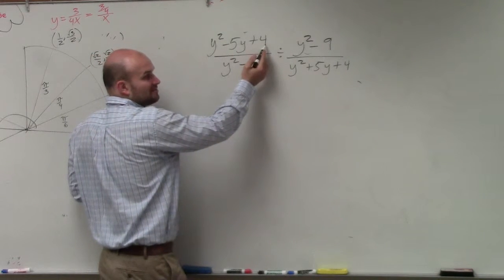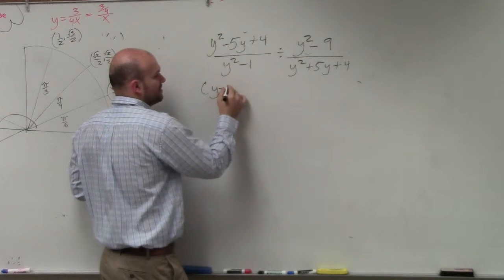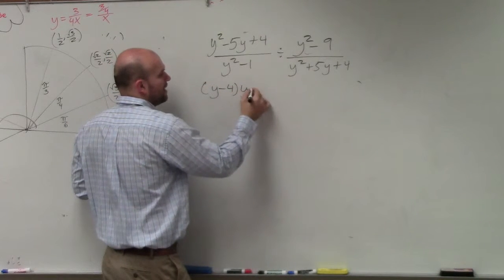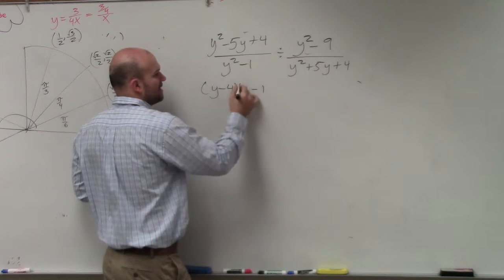Basically, we're asking what two numbers multiply to give you 4, add to give you negative 5. That's going to be (y-4) times (y-1).